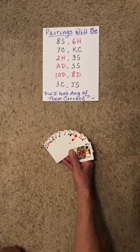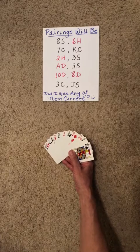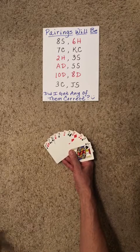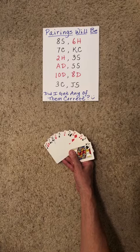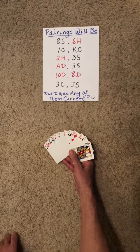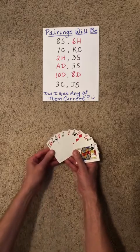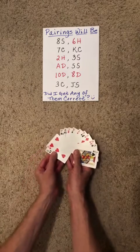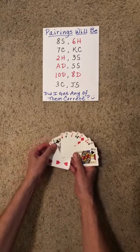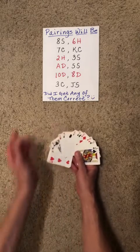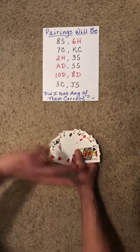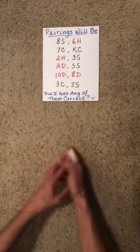Ask the spectator for any even number of cards. Then on a piece of paper, tell them that you are going to write down the identities of the cards. Now secretly you're going to write them down in pairs as indicated. Put your piece of paper away for later.